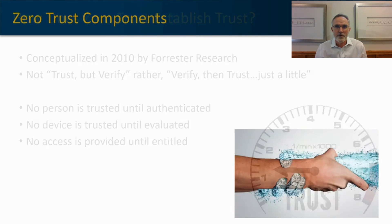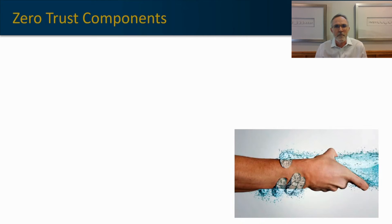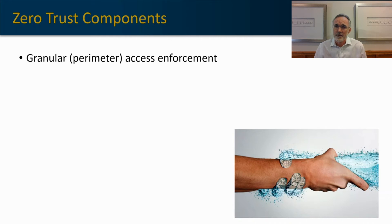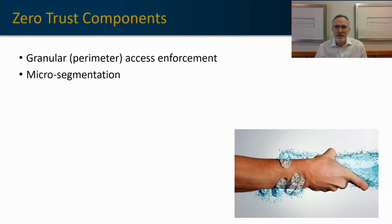Let's break zero trust down into its components so you can see how you might introduce zero trust into your organization. The first component is granular perimeter access enforcement. The term perimeter is used in the industry, but understand that the whole concept of perimeter really needs to go away in a zero trust conversation. Granular access enforcement means you know who's accessing the network and you're applying specific access credentials and entitlements to those individuals or systems before they get permission to enter the network.